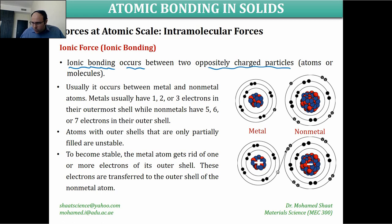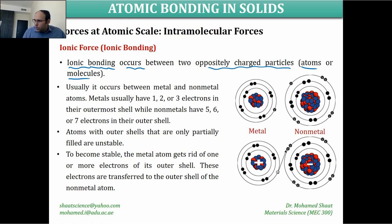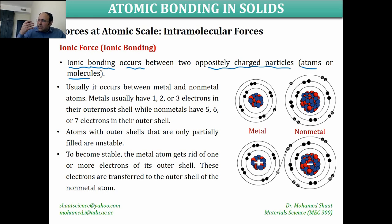The ionic force is an attraction force generated between any two particles of opposite charges — one positive, one negative. It is more likely to exist between atoms than molecules. Ionic bonding usually occurs between metal and non-metal atoms: one becomes positive, the other becomes negative, and the resulting attraction forms the bond.